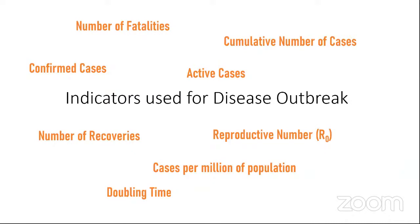There are eight indicators for disease outbreak. We are quite familiar with the reproductive number — how many individuals can be infected per infected individual. Then cases per million of population, which indicates the spread of the disease in a particular region. The doubling time denotes how much time is required for the number of cases to double. And some familiar indicators such as the number of active cases, fatalities, recoveries, confirmed cases, and cumulative number of cases. For our visualization, we focus on three indicators: the number of deaths, the active cases, and recoveries — all cumulative on a specific date.